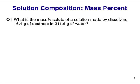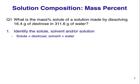Our first step is to disentangle all the information in the question, to identify the solute and solvent and/or solution. Picking through all this information is sometimes the most challenging part of answering questions like this one. In this case, the solute — the thing being dissolved — is the dextrose. The dextrose is being dissolved in water, so water must be the solvent.